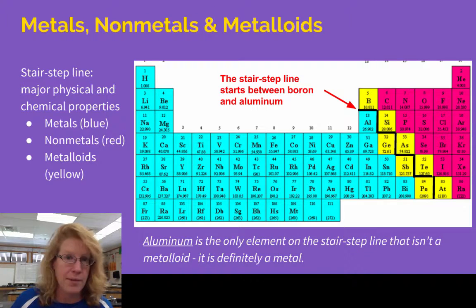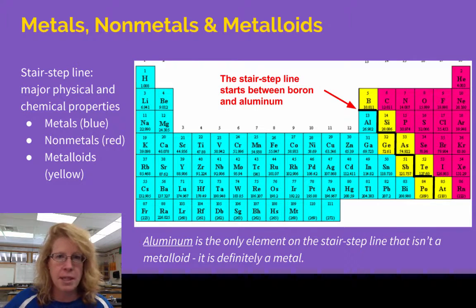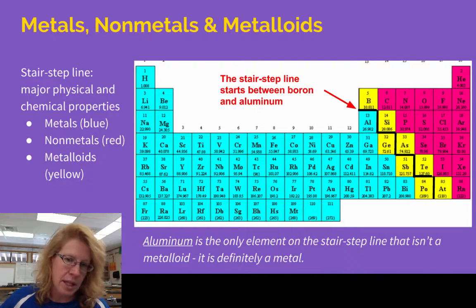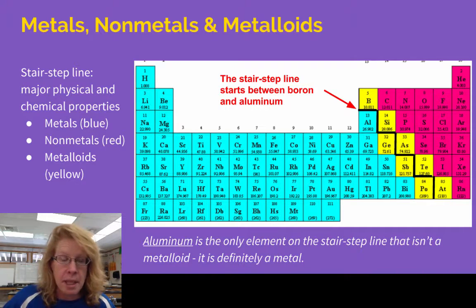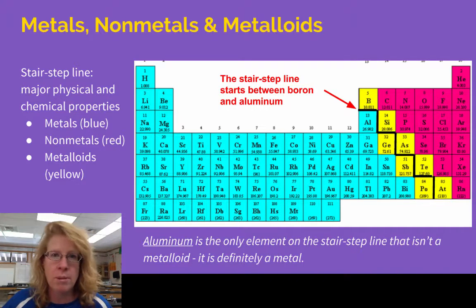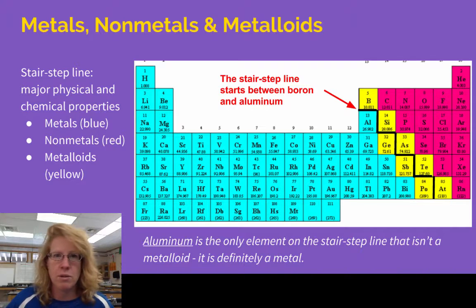Number one, the biggest thing that you need to be able to get from the periodic table is this crazy thing called the stair-step line. It's called the stair-step line because it looks like some stairs. The stair-step line starts right between boron and aluminum and kind of zigzags down and to the right — one over, one down, one over, one down.